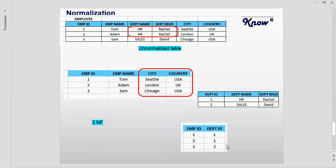Now if we look at the employee table created after the second normalized form, we can see two columns: city and country. We can observe that the value of country is dependent on the value of city — so if a city lies in the USA, the country would be USA. The third normalized form says that these transitive dependencies should be removed from your tables.